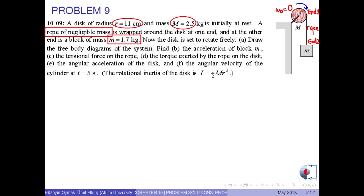Now the disk is set to rotate freely. A: Draw the free body diagrams of the system. B: Find the acceleration of block m. C: Find the tensional force on the rope. D: Find the torque exerted by the rope on the disk. E: Find the angular acceleration of the disk.